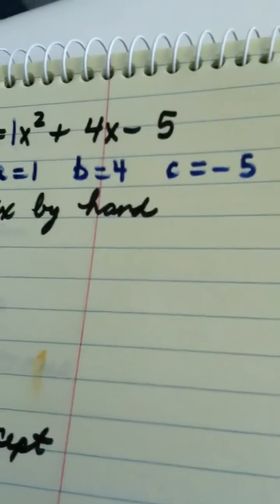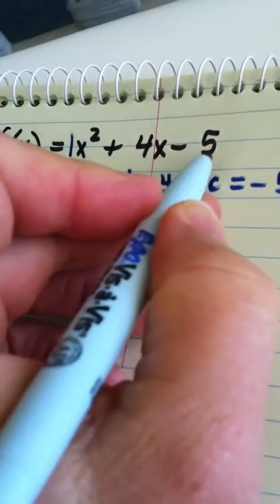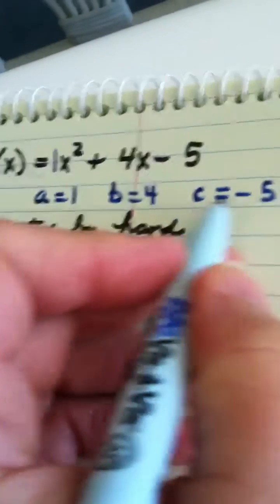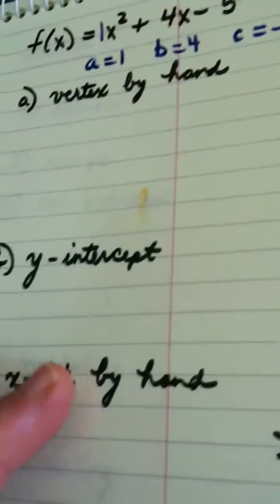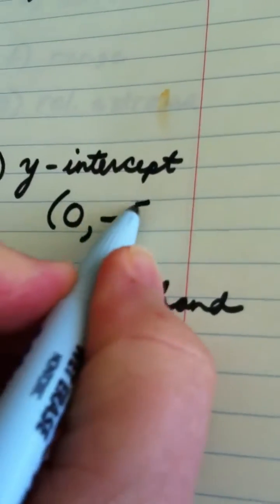One question I've already answered: when a function's in a parabolic function, a quadratic function's in this form, the value of c gives you the y-intercept. So we automatically know the y-intercept is the ordered pair 0 comma negative 5.